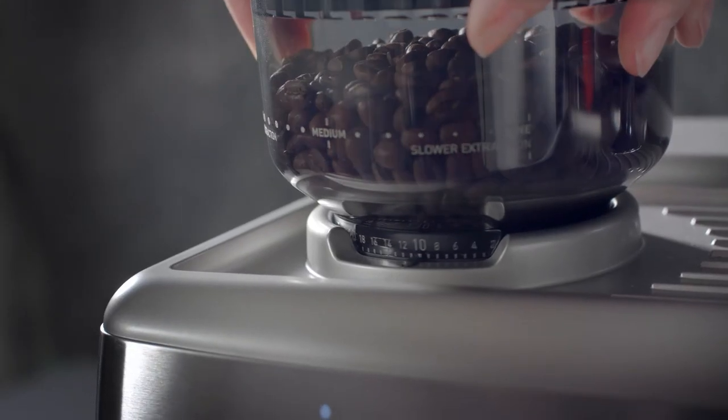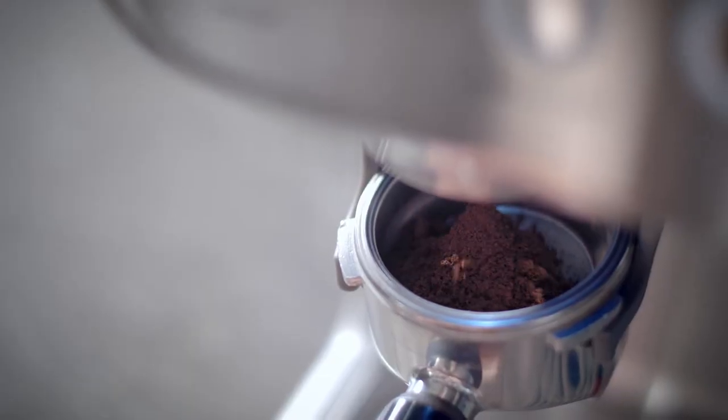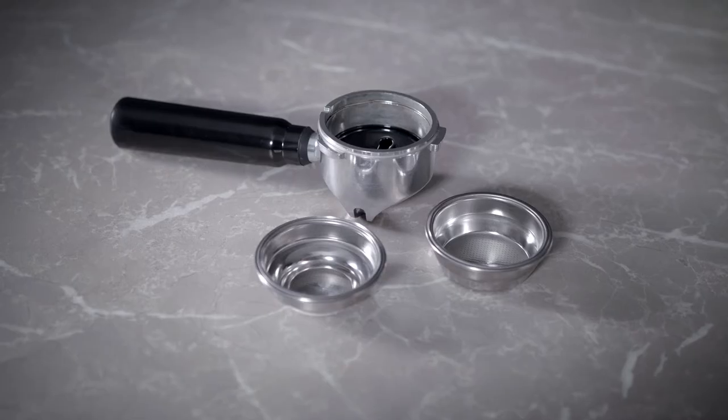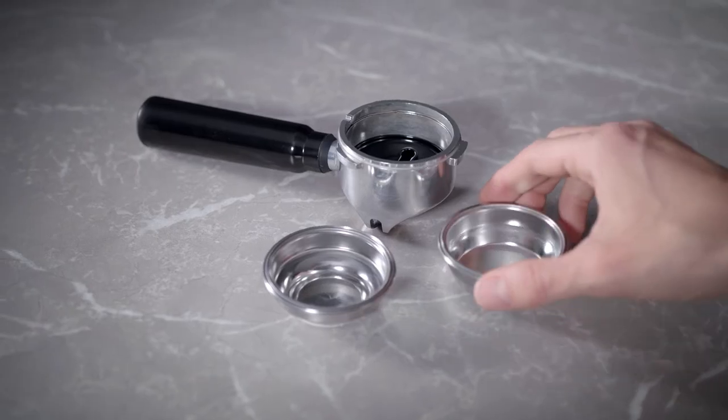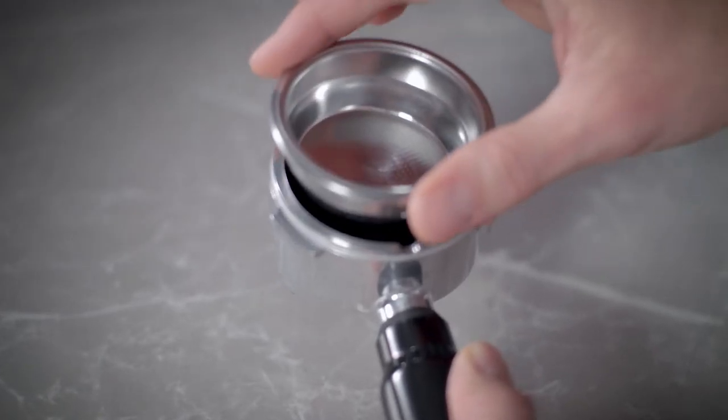Make sure you select the right grind setting for you. A good place to start is grind setting 10. Select your filter basket, either 1 cup or 2 cup, and insert into the group handle.